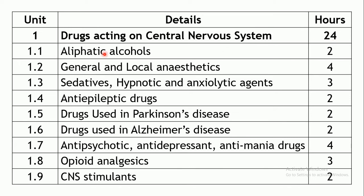The first chapter under drugs acting on the CNS is aliphatic alcohols. You will be studying about ethanol and methanol — their actions, mechanism of action, the toxicity caused by these aliphatic alcohols, and how it can be treated. This chapter is allotted 2 hours.